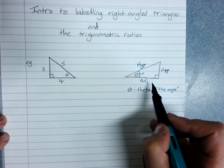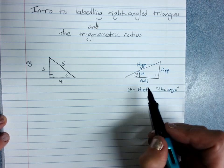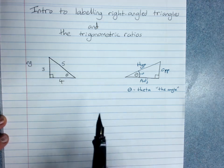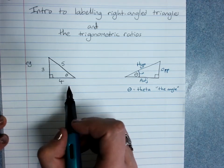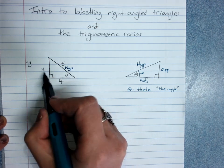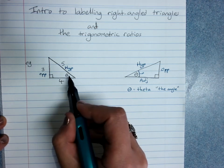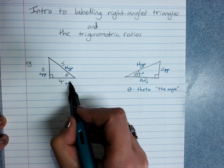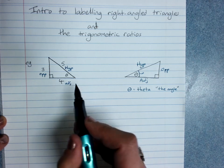So the two short sides are opposite and adjacent. The long side is hypotenuse. So for this triangle, five is our hypotenuse, three is our opposite, four is our adjacent. Adjacent just means next to something.